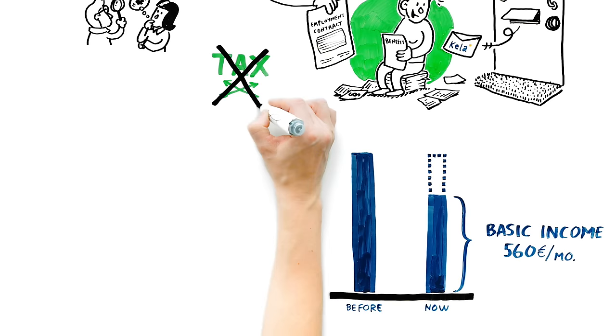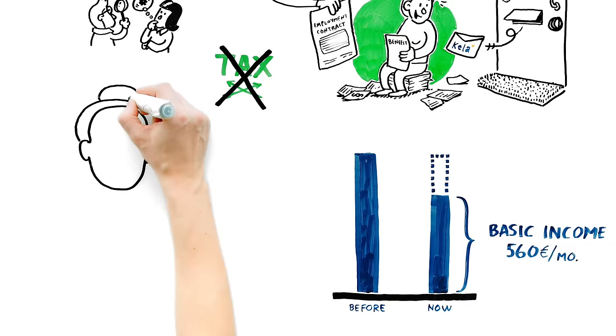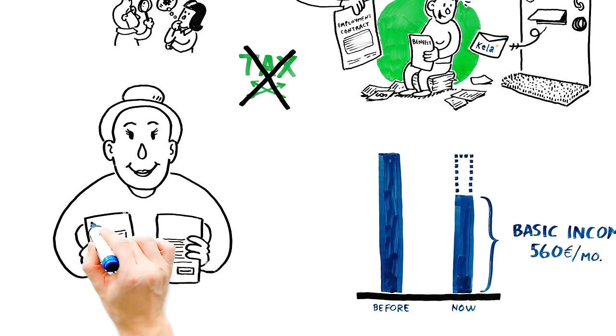The Basic Income is a tax-free benefit and will not be reduced by any other income the participant may have. So, if the participant finds a job during the experiment, he or she will get both the salary and the Basic Income.